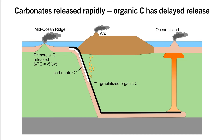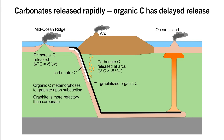Most previous research has used this value of around minus 5 per mil for all volcanically emitted CO2 and assumed that this value never changes. However, this may not be the case. At sub-arc conditions, carbonate is more easily removed from the subducting slab compared to graphite. Therefore, arc volcanoes are likely to be enriched in carbonate-derived CO2, which has a delta-13C of around 0 per mil. Therefore, arc CO2 is likely to have delta-13C greater than minus 5 per mil. So if the arc flux increases, the delta-13C of global CO2 emissions will increase and initiate a positive carbon isotope excursion.